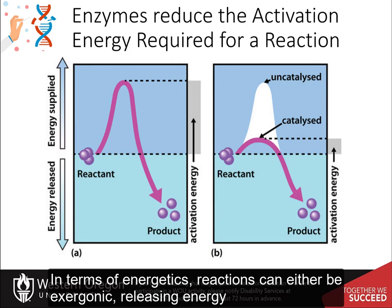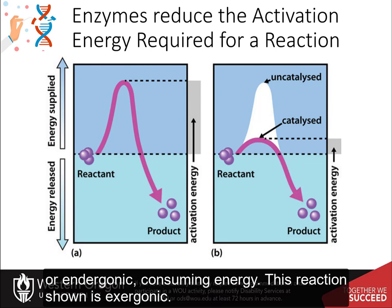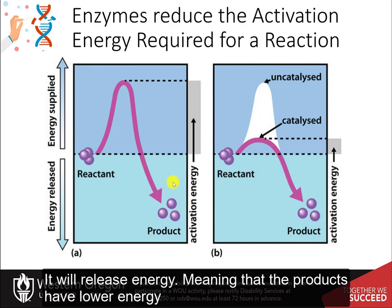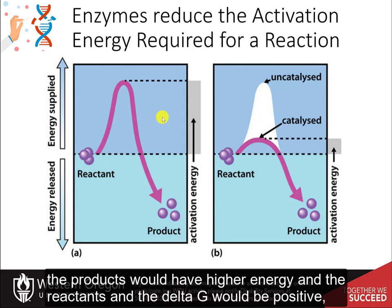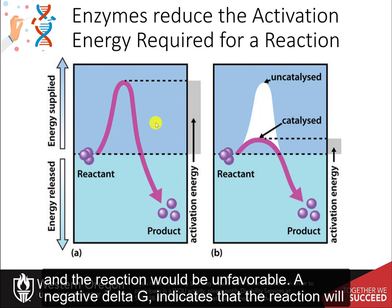In terms of energetics, reactions can either be exergonic, releasing energy, or endergonic, consuming energy. The reaction shown is exergonic — it will release energy, meaning the products have lower energy than the reactants. If this were an endergonic reaction, the products would have higher energy than the reactants, the delta G would be positive, and the reaction would be unfavorable. A negative delta G indicates that the reaction will be favorable.